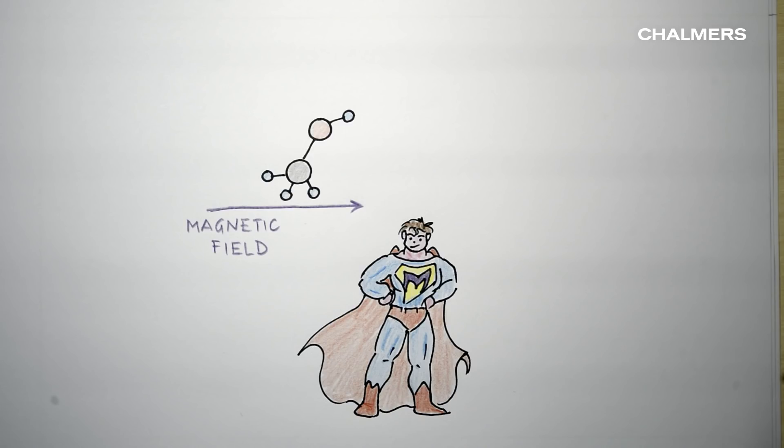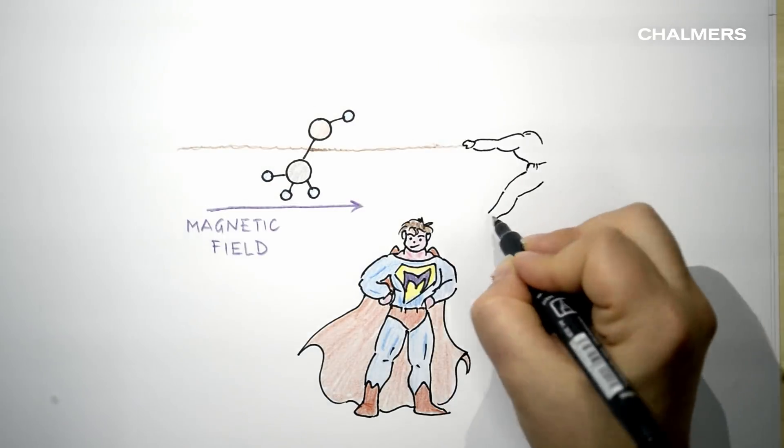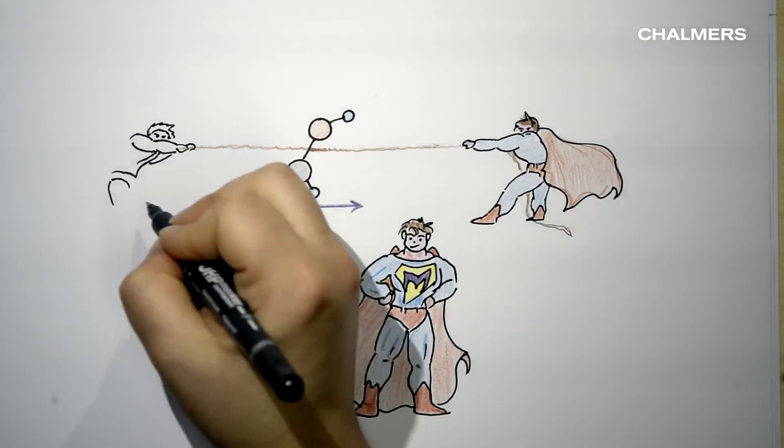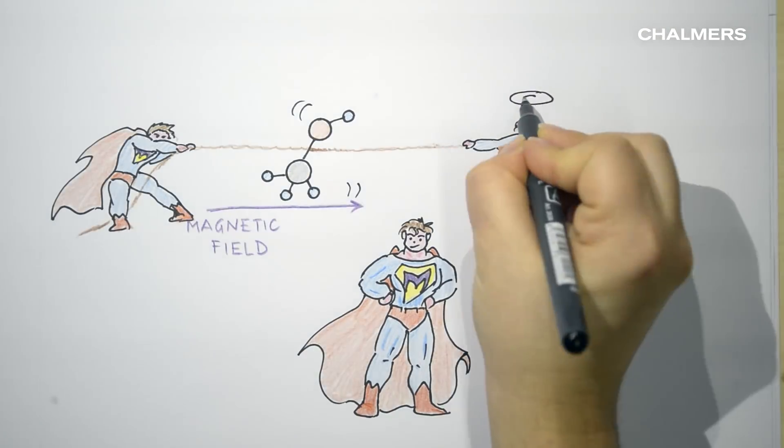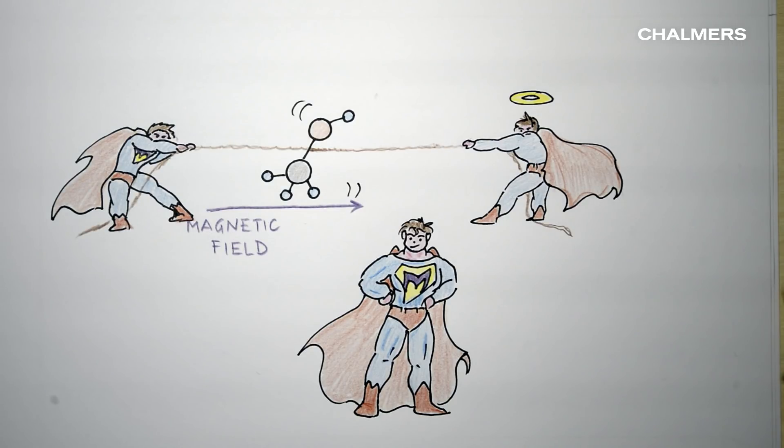This is methanol. In the presence of a magnetic field, a molecule behaves a bit differently. One part of the molecule is stabilized. It likes being in a magnetic field. And the other part is destabilized.